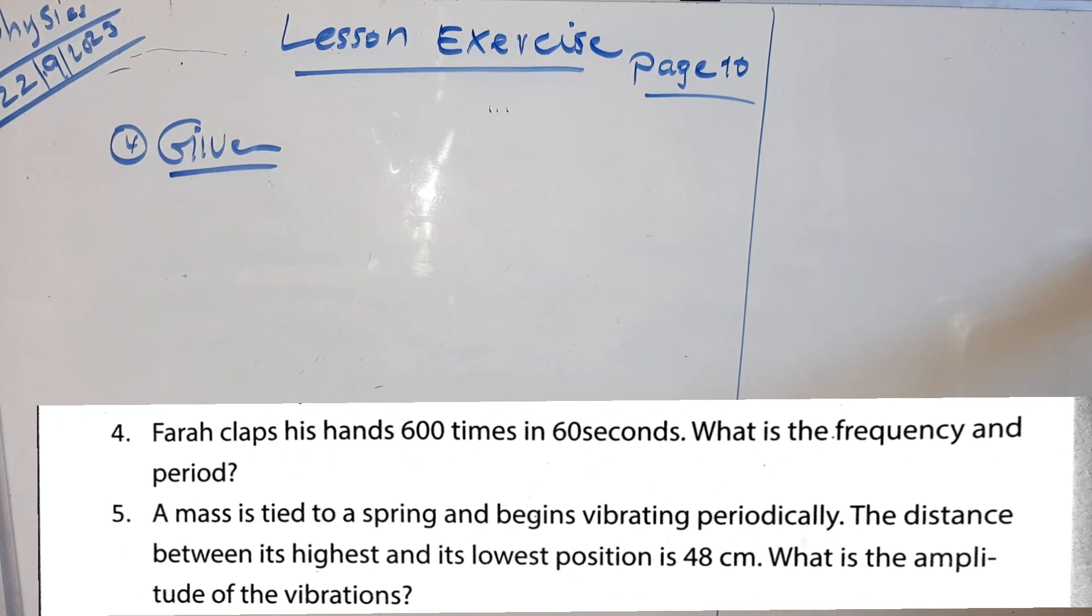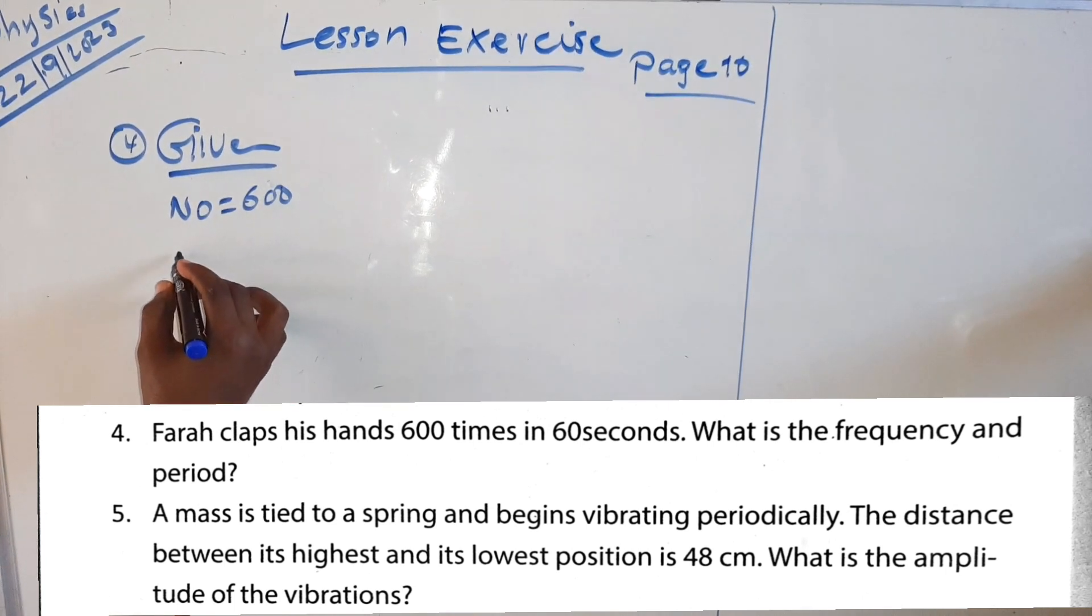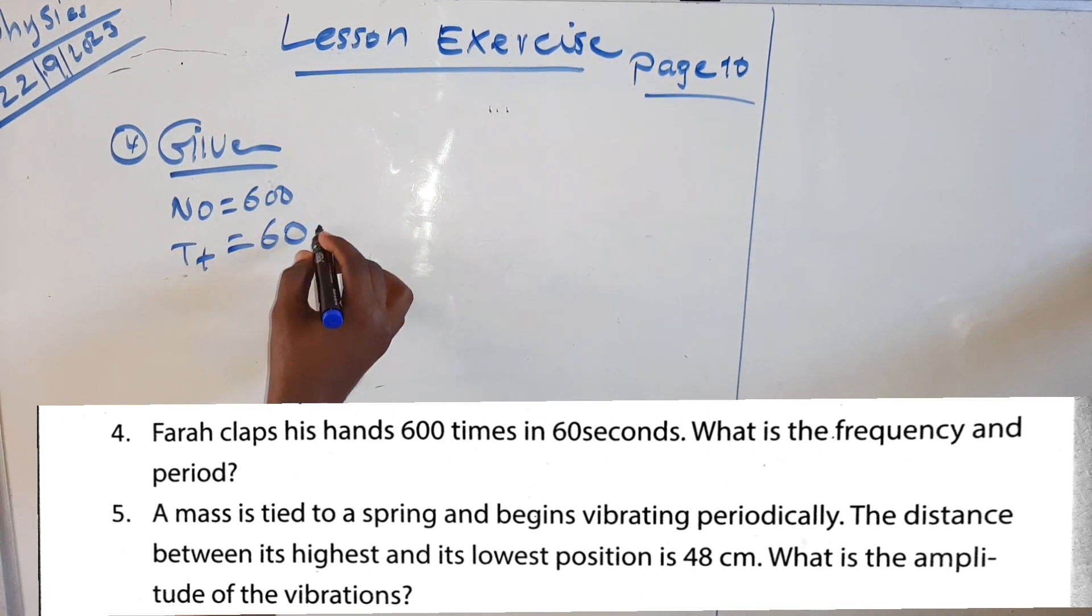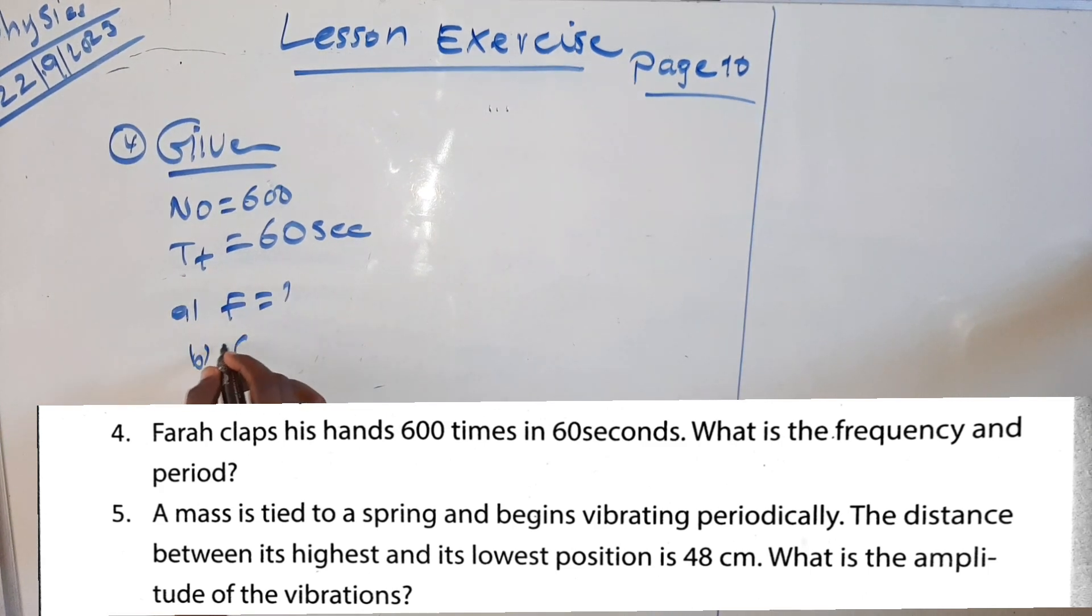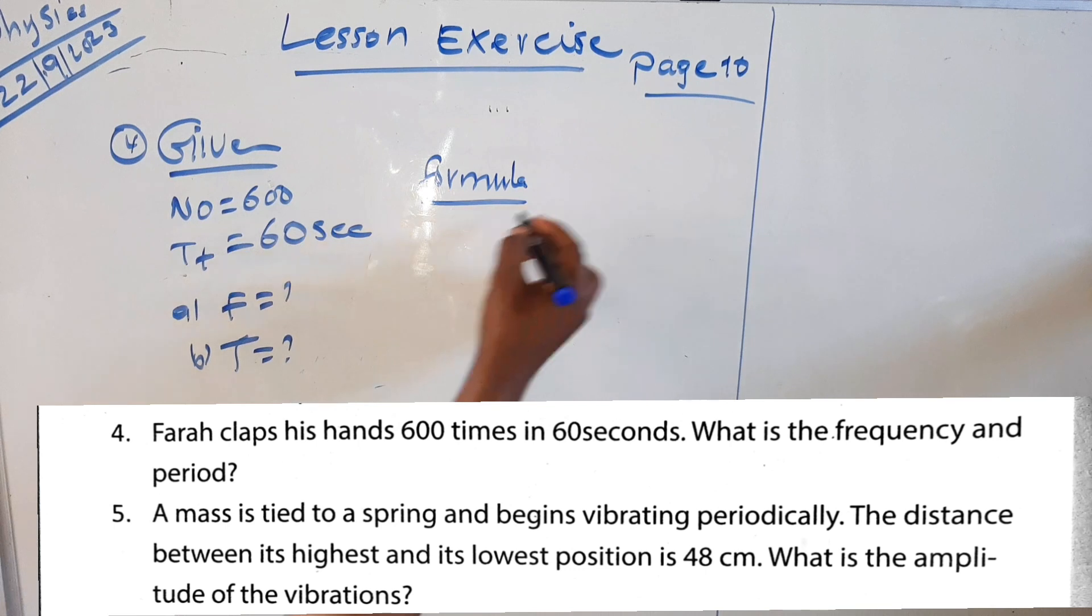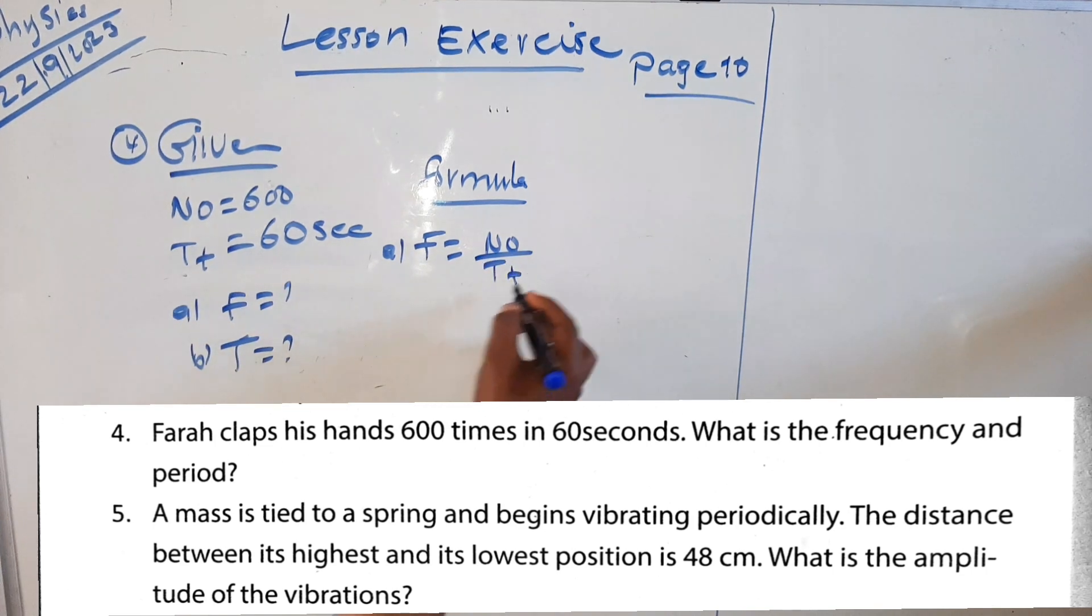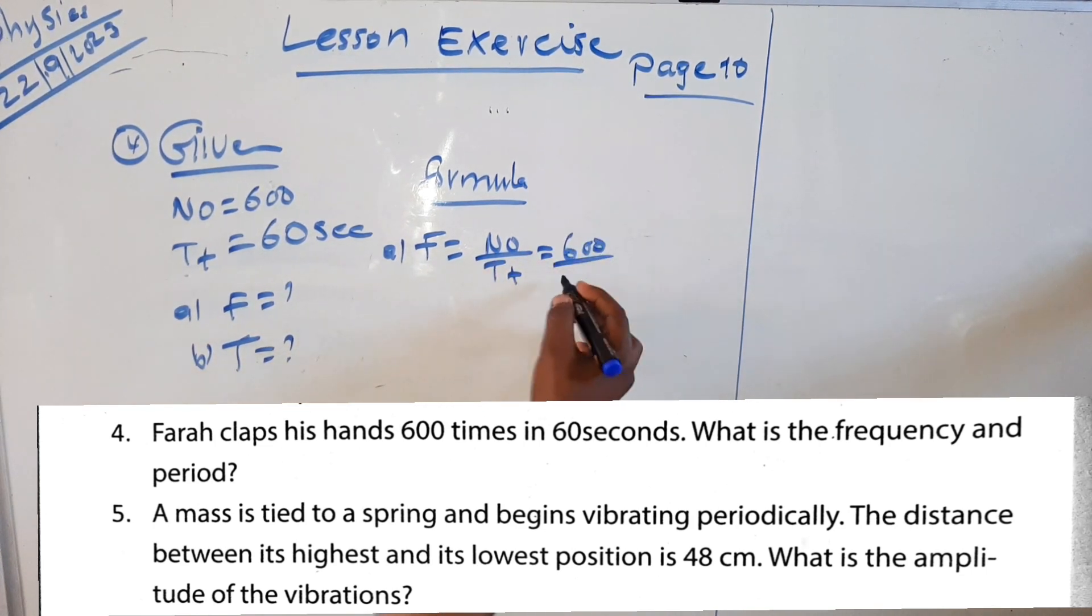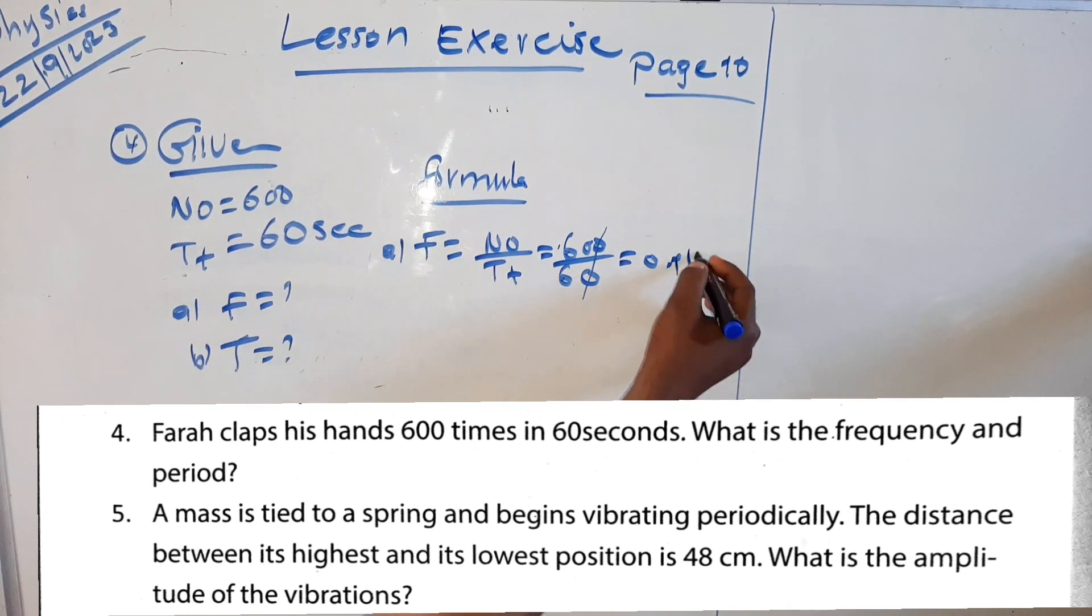Number of oscillations, 600 times. Time taken 60 seconds. What is the frequency? Frequency is the number of oscillations over time taken. Number of oscillations divided by time taken. 600 divided by 60 equals 10 Hertz.